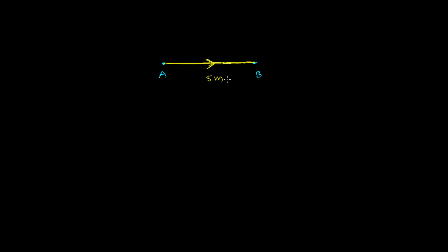So this is the graphical representation of a vector. Symbolically, while representing this vector quantity — this displacement of 5 meters from A to B — we write 'AB' and give an arrow over the head. We must give the arrow over the head.